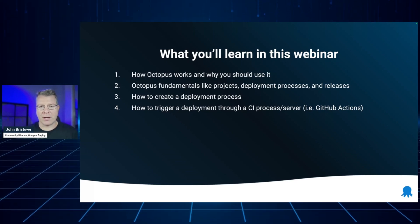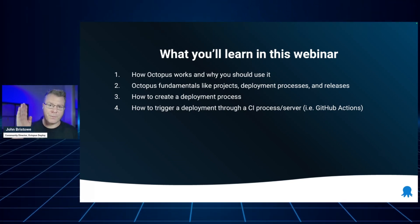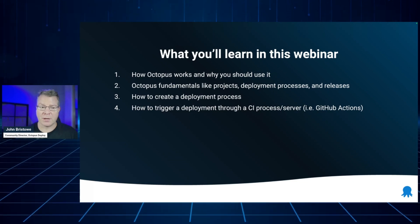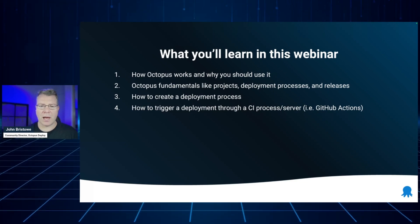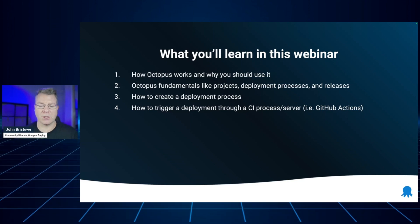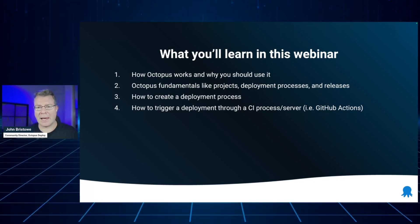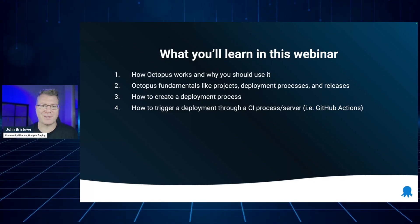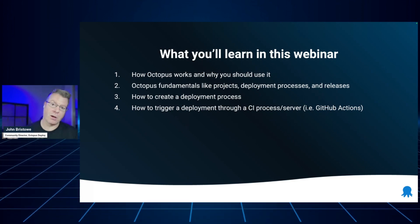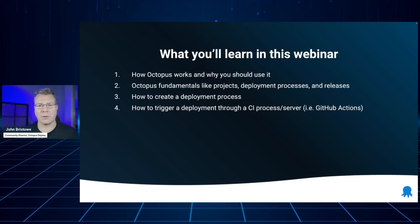The third thing we'll look at is how to create a deployment process from scratch. Deployment processes are basically a series of steps that you use to deploy software from Octopus to some target. It's a really easy process, in fact. Finally, we'll wrap up by showing you how you can trigger that deployment process through an integration with CI, or continuous integration — products like GitHub, GitLab, Azure DevOps, TeamCity. We'll show you how to kickstart a deployment process from those products so you can see the linkage between the two.